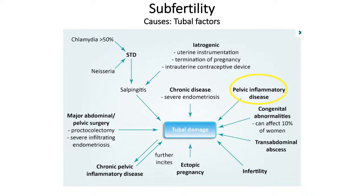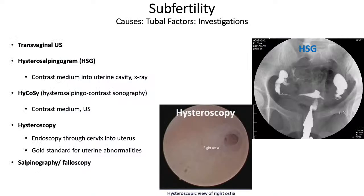Blockage can be proximal, mid-tubal, or distal. An important condition is hydrosalpinx — where the tube is blocked and fills with clear fluid, typically near the ovaries, causing a large distended tube. Hydrosalpinx is significant as it can leak out and ruin IVF pregnancies, so patients are advised to have it removed before IVF. A haematosalpinx is a blood-filled tube and a pyosalpinx is a pus-filled tube.